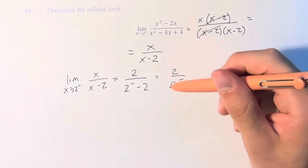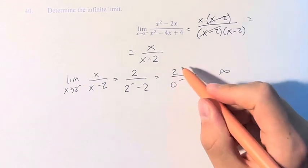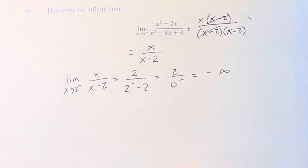Taking any number and dividing it by numbers approaching 0 is going to be infinity. From the left means this is a negative number. Positive number divided by a negative number is negative infinity.